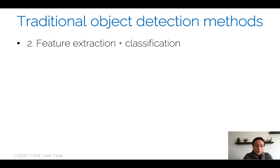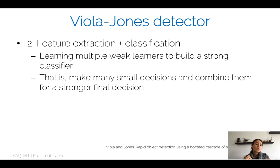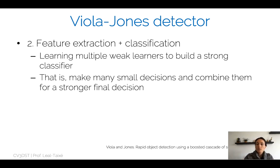Instead of this approach, object detection methods moved quickly toward the paradigm of feature extraction plus classification. The best detector to exemplify this is the Viola and Jones detector — the first detector that worked really well with this paradigm. Presented in 2001, the main idea was that the method would actually learn — there's already machine learning involved — learning multiple weak learners to build a strong classifier. This means learning to make many small decisions and combining them to make a strong final decision.